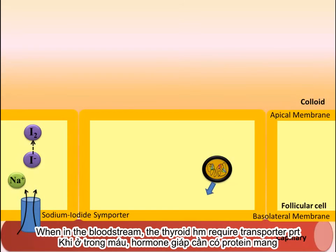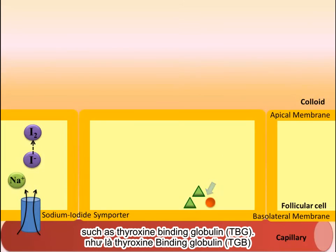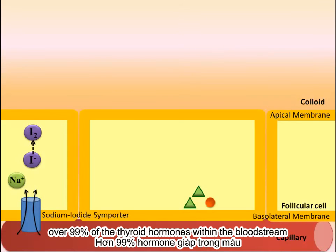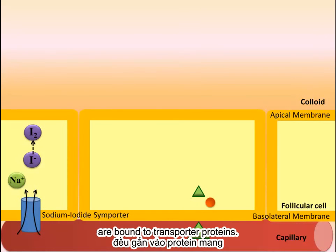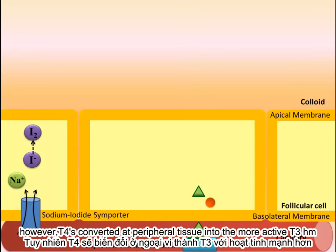T3 and T4 then diffuse across the basolateral membrane into the bloodstream. Once in the bloodstream, the thyroid hormones require transporter proteins such as thyroxine-binding globulin, or TBG. Over 99% of the thyroid hormones within the bloodstream are bound to transporter proteins. Approximately 90% of the secretory product is T4; however, T4 is converted at peripheral tissues into the more active T3 hormone.